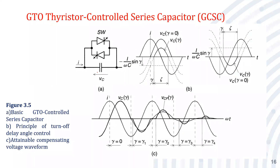Looking at the basic diagram, the current and the voltage across the capacitor VC are shown. The GTO is connected in anti-parallel and triggers at the peak value of the line current. The key concept here is the turn-off delay angle — not the turn-on delay angle — because this is the anti-logic compared to the thyristor-controlled reactor and thyristor-switched capacitor used in shunt compensation.